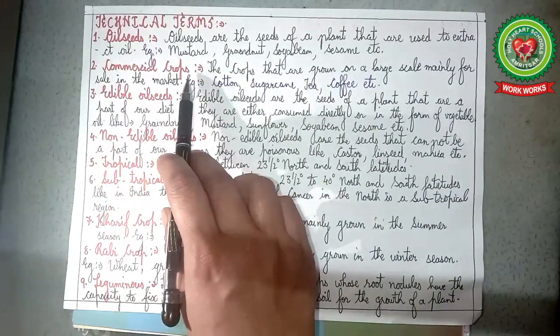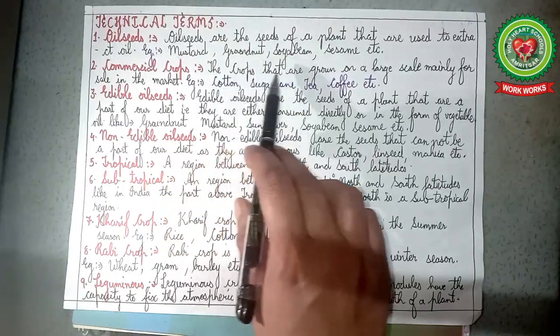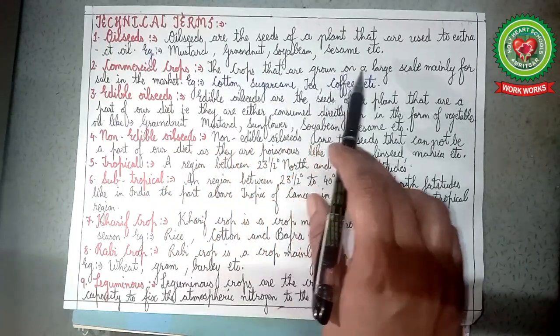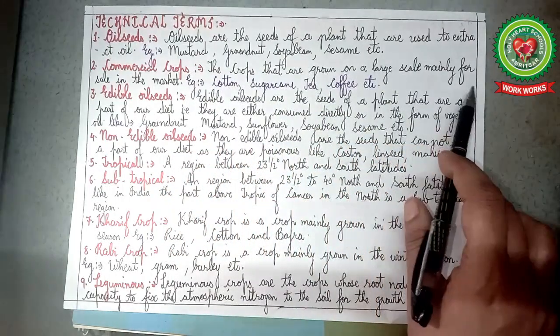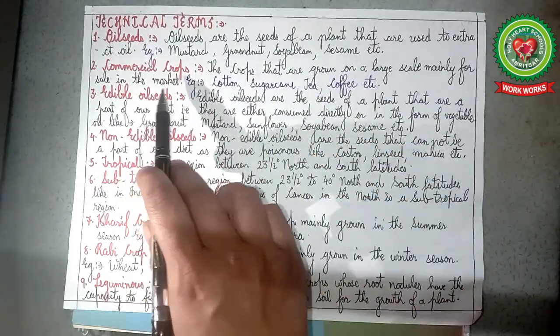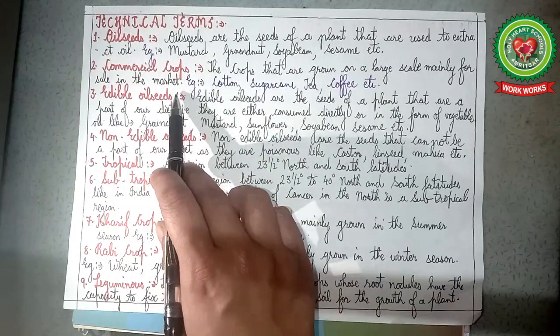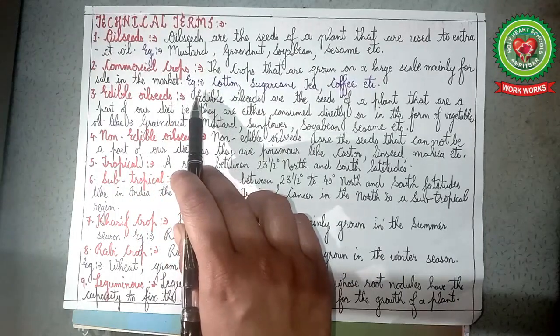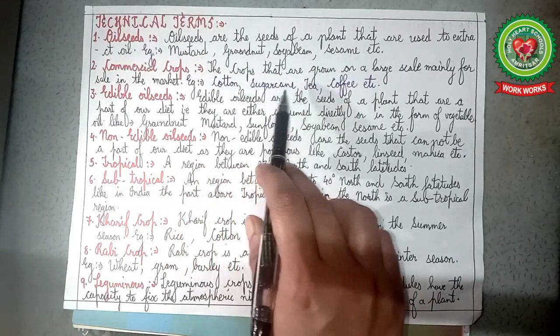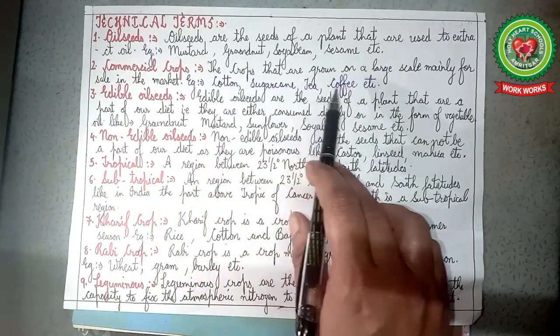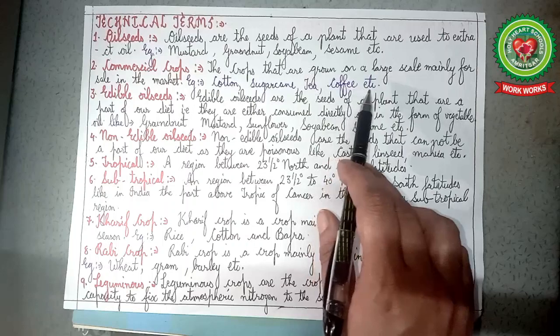Number 2, commercial crops: crops that are grown on a large scale, mainly for sale in the market — for example, cotton, sugarcane, tea, coffee, etc.